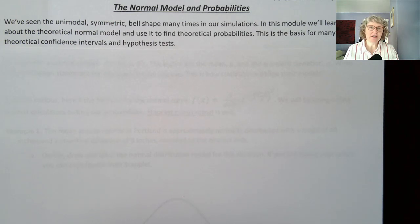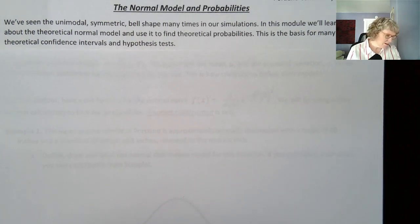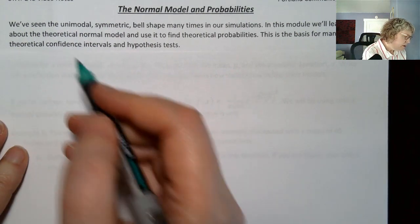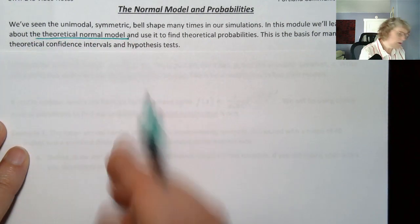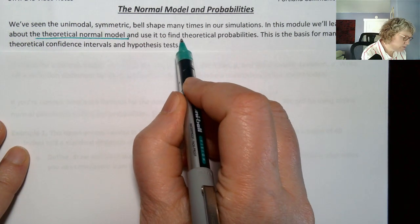Now to compare that, we're going to look at some of the theoretical methods. Not for all of the tests we've done, but for some of the tests we've done. So today, or right now in this series, we're going to talk about the normal model. We've seen this unimodal symmetric bell-shaped curve many times. It's come up in just about all of our simulations, as long as certain conditions were met. In this module, we're going to learn about the theoretical normal model and use it to find theoretical probabilities.